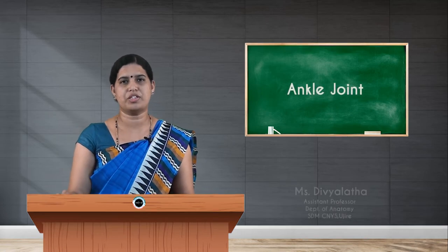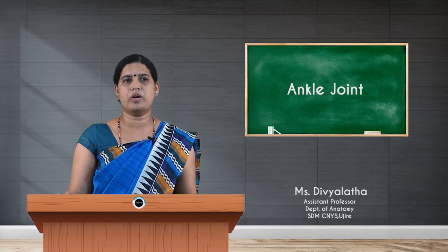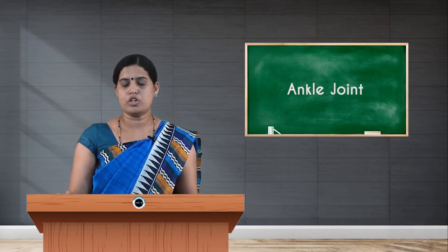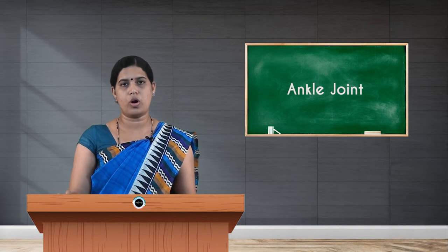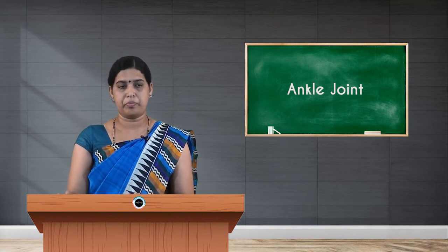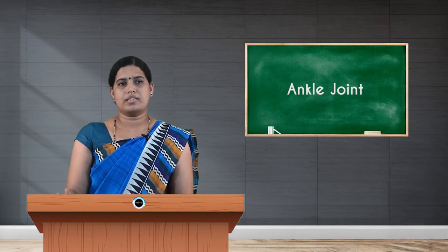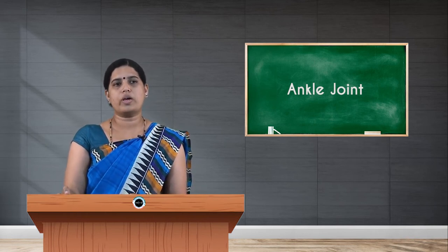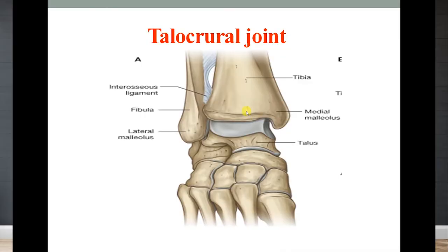Hello students, welcome to the session. Today I am going to talk about the ankle joint, which comes under the lower limb. The ankle joint is also called the talocrural joint. It is the distal synovial joint of the lower limb. The articular surfaces include the inferior articular surface on the talus, the facet on the medial malleolus, and the facet on the lateral malleolus.